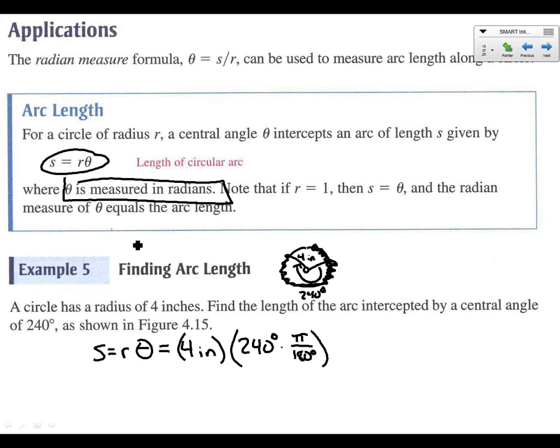And then from there, we're just going to cancel things out. 180 and 240 is 4 and 3. And so we've got 4 times 4 is 16 pi inches over 3 would be our final answer.